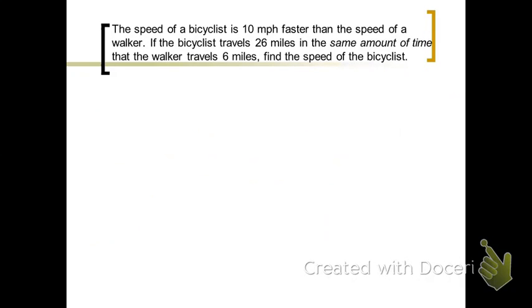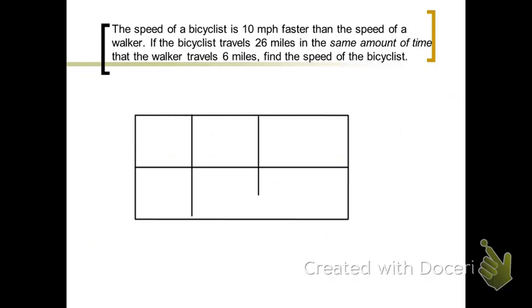It says the speed of a bicyclist is 10 miles per hour faster than the speed of a walker. If the bicyclist travels 26 miles in the same amount of time that the walker travels 6 miles, find the speed of the bicyclist. So again, we're going to draw a chart. And in fact, when we work with speed, this formula d equals r times t is the formula or the equation that we're going to want to use. And so we have a distance rate and time that we can set up for the bicyclist and the walker.